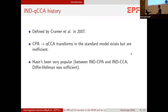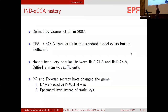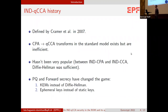Maybe because it's between IND-CPA and IND-CCA security, or maybe because before we could use Diffie-Hellman, which is secure against active adversaries even under reasonable assumptions. But now the crypto game has changed because we want post-quantum and forward secrecy. We want KEMs instead of Diffie-Hellman for post-quantum, and we want ephemeral keys instead of static keys for forward secrecy. So maybe in some cases, IND-CCA security is not really needed.